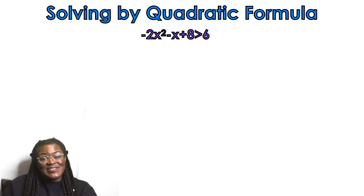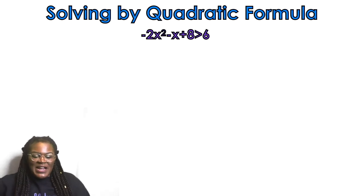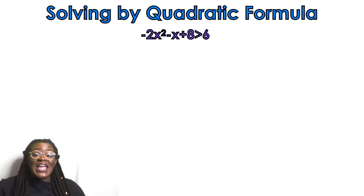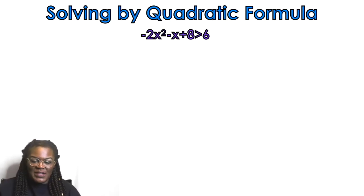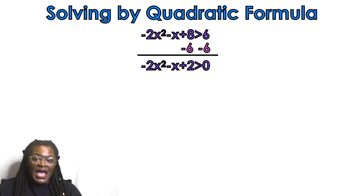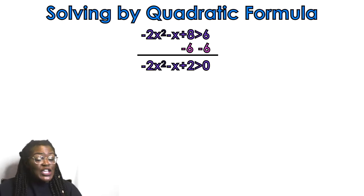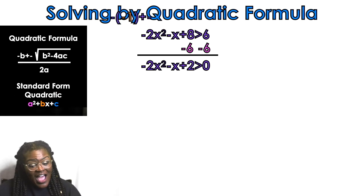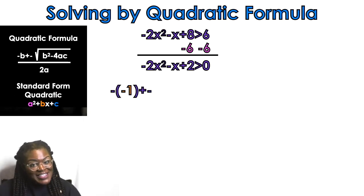We have three examples. Example number one is negative 2x squared minus x plus 8 is greater than 6. We're using the quadratic formula, and to use it you always want to make sure that your problem is set equal to 0 at the beginning. Once it is set equal to 0, you plug it into the formula.